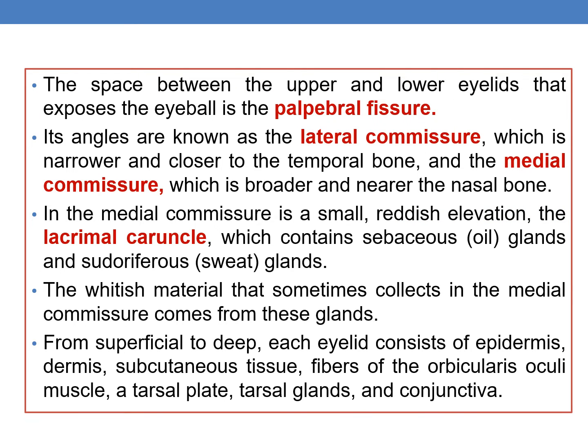The space between the upper and lower eyelids that exposes the eyeball is the palpebral fissure. Its angles are known as the lateral commissure, which is narrower and closer to the temporal bone, and the medial commissure, which is broader and nearer to the nasal bone. In the medial commissure is a small reddish elevation called the lacrimal caruncle, which contains sebaceous glands and sudoriferous glands.